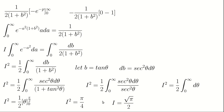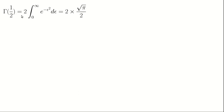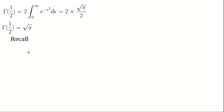Making I the subject, I equals the square root of pi over 2. Recalling that gamma(1/2) equals 2 times I, substituting back gives gamma(1/2) equals 2 times root(pi) over 2. The two cancels and we get gamma(1/2) equals root pi.